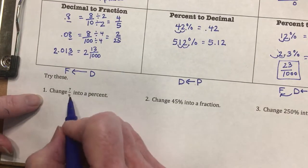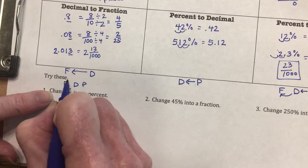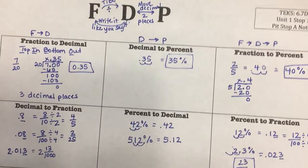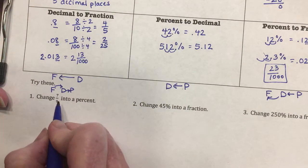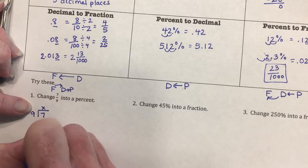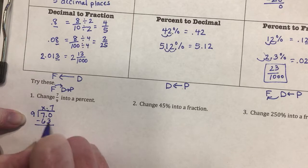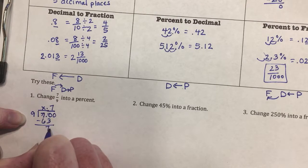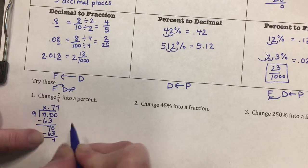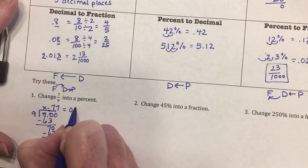Now let's change 7/9 into a percent. Starting with a fraction, I go fraction to decimal then decimal to percent. Using TIBO: 7 inside, 9 outside. I add a decimal and zero; 9 goes into 70 seven times — 7 times 9 is 63, remainder 7. Bringing down another zero, 9 goes into 70 seven times again — I keep getting the same remainder, so this is a repeating decimal.